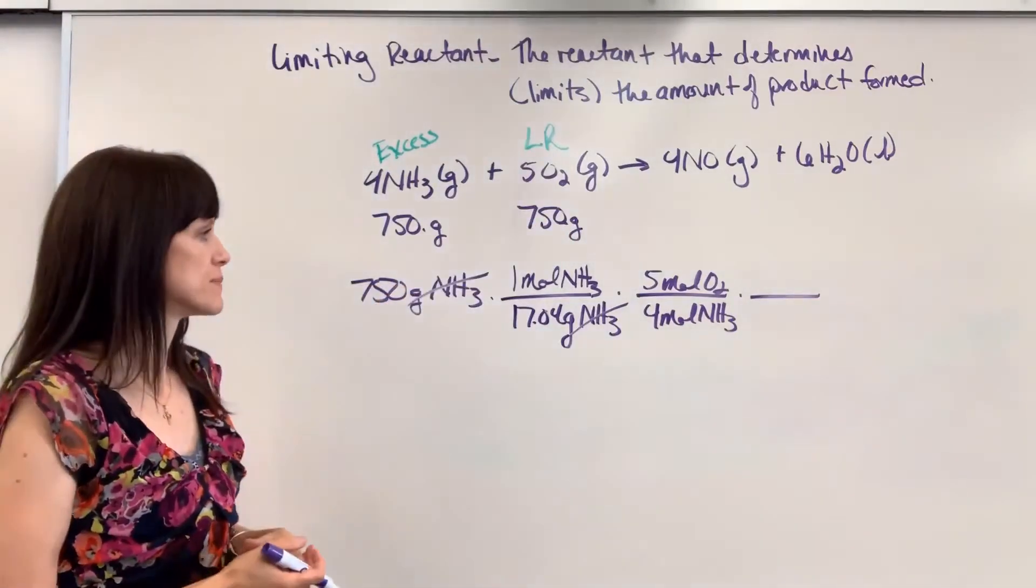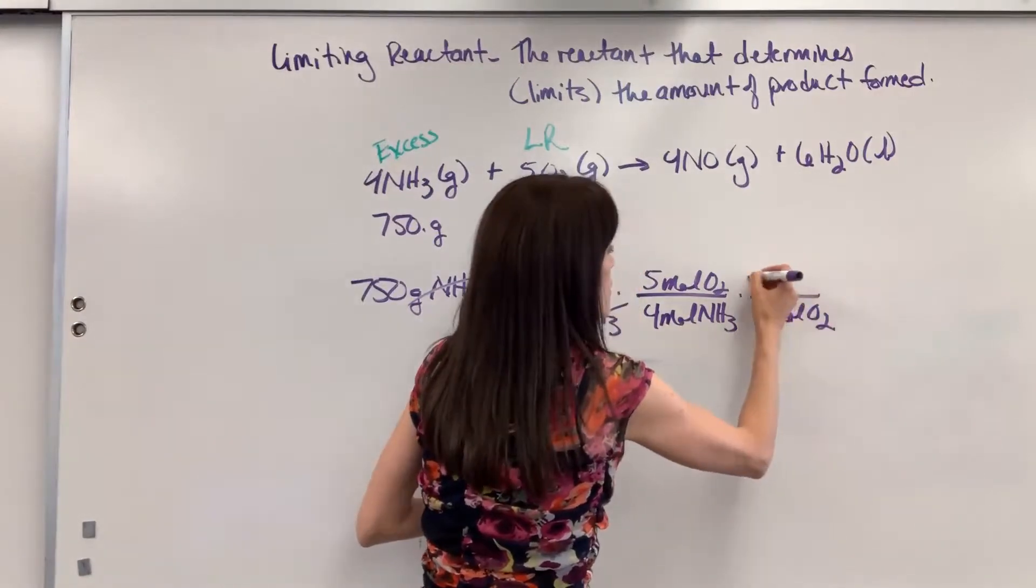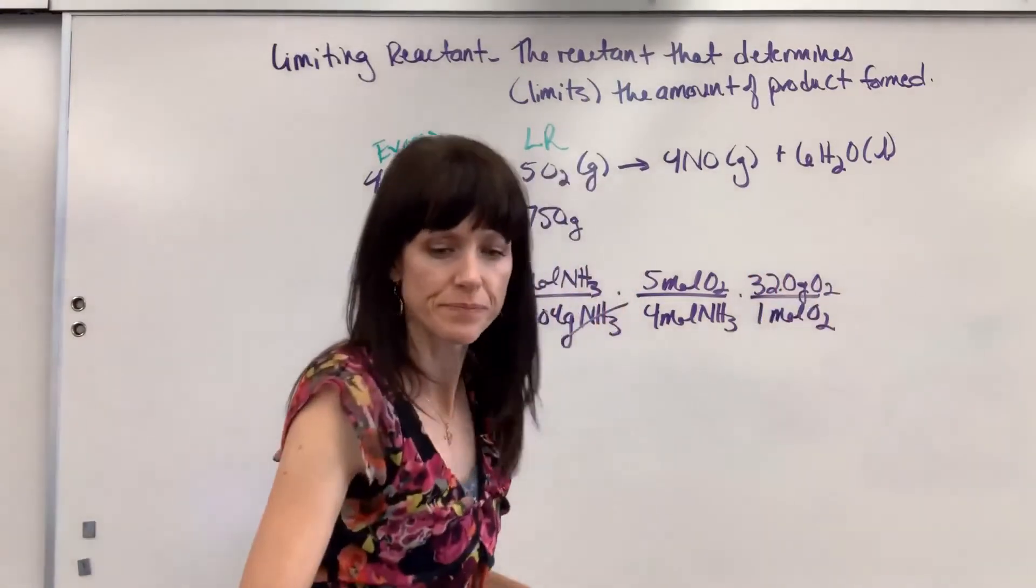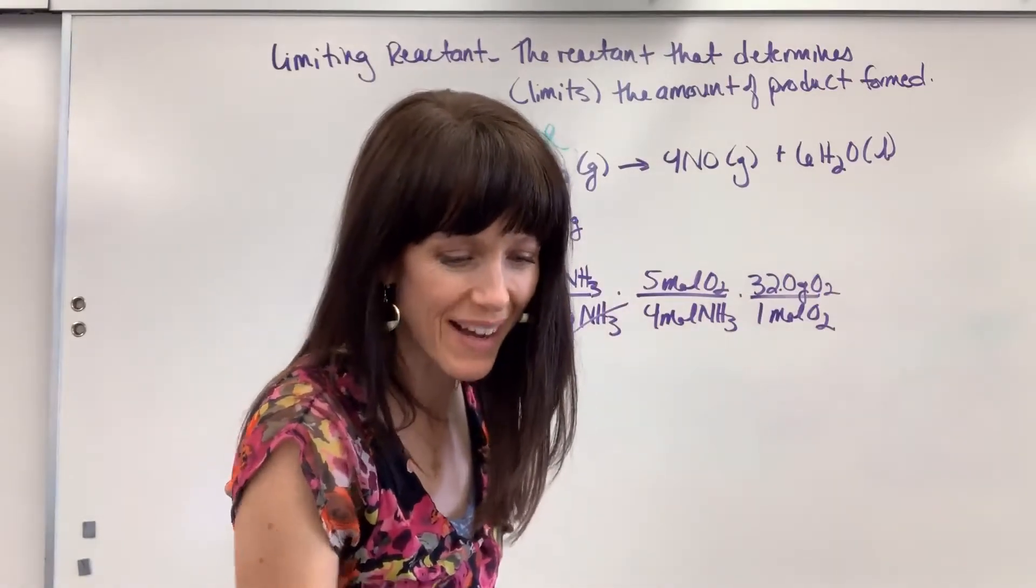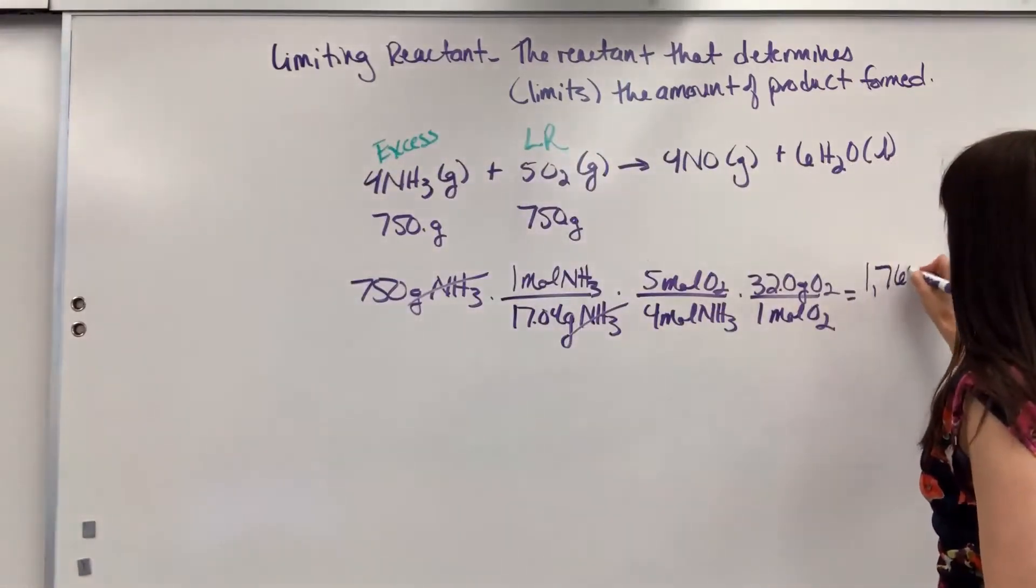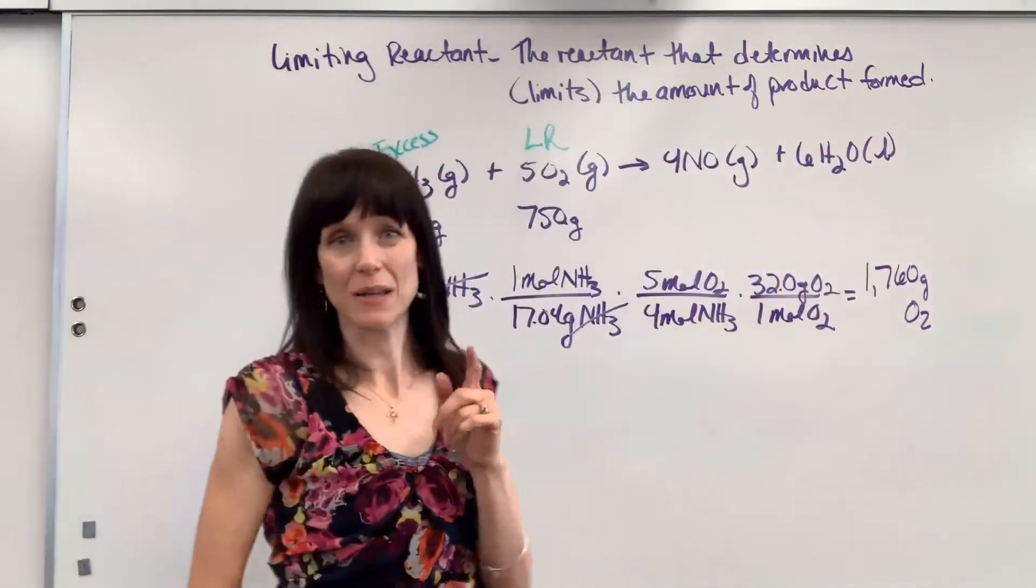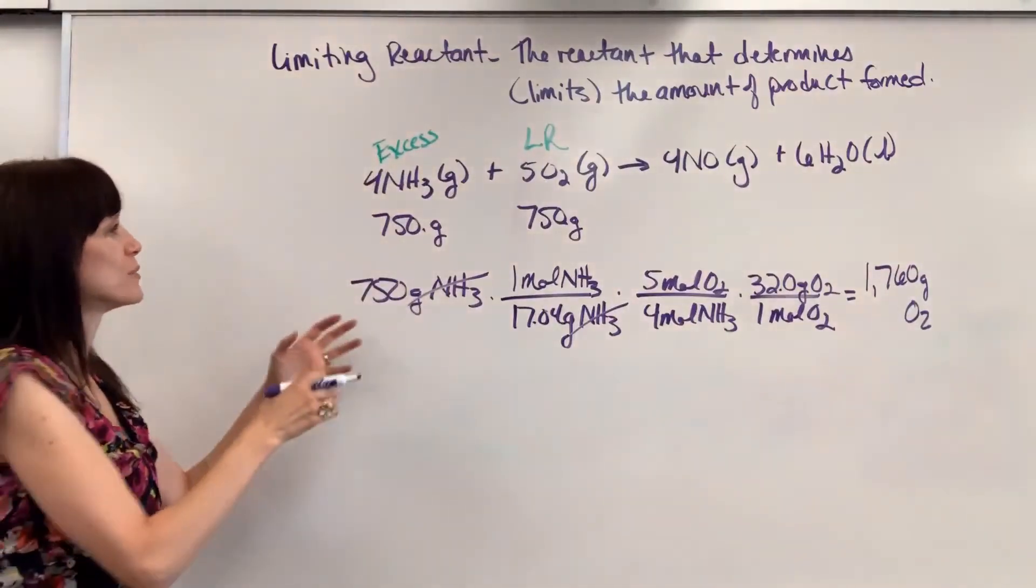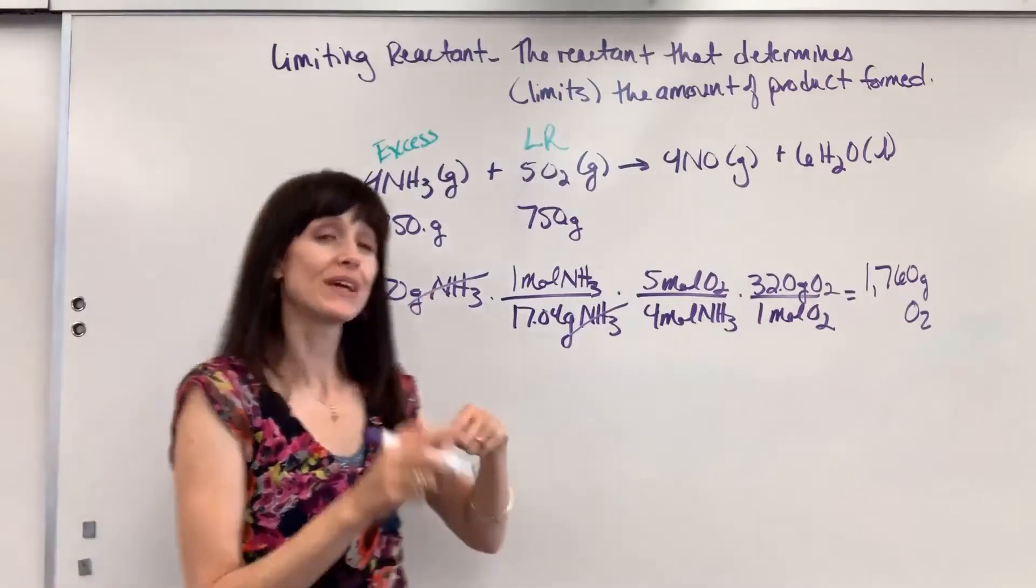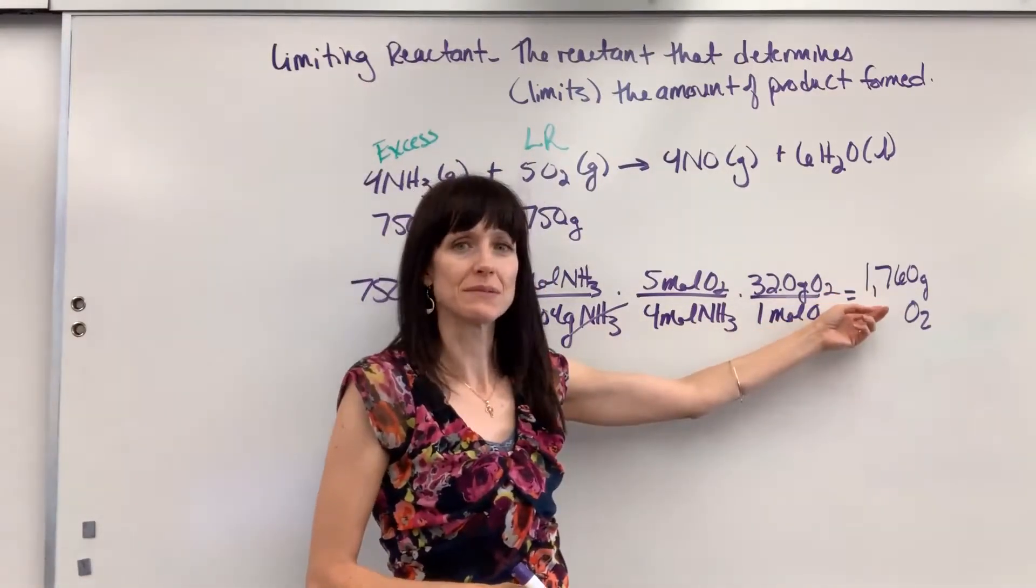Now we're going to walk that bridge. We're going to go from the four moles of ammonia to the five moles of oxygen. Now I'm going to bring this to grams because I've got to compare it to the grams I'm given, the 750 grams. One mole of oxygen weighs 32 grams of oxygen. So when we do this math, oh, really interesting. We get 1760 grams of oxygen.